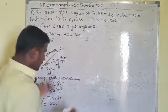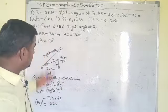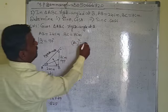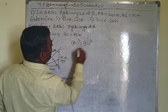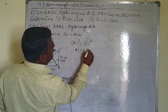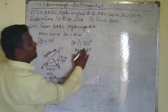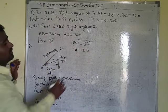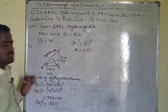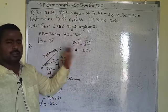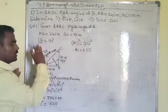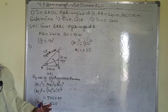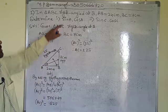Therefore AC² = 625, so AC = √625 = 25. The hypotenuse AC is 25 centimeters. Now we can easily find all the trigonometric ratio values since we have all three sides.